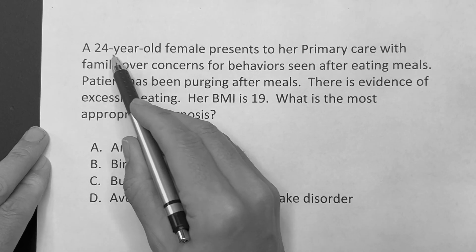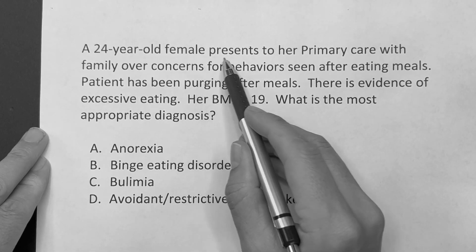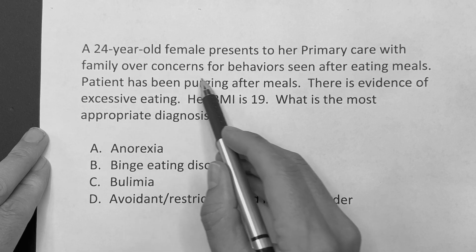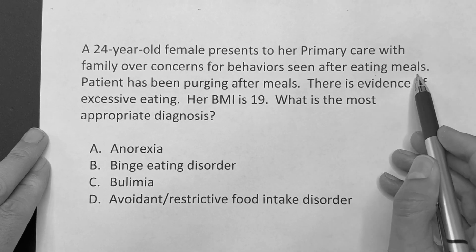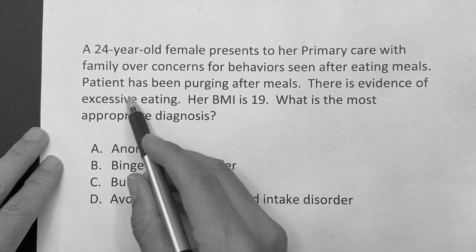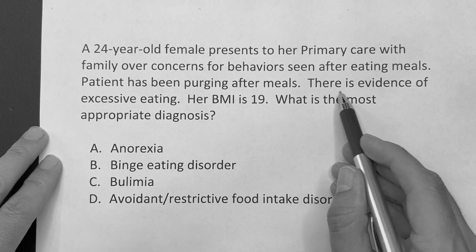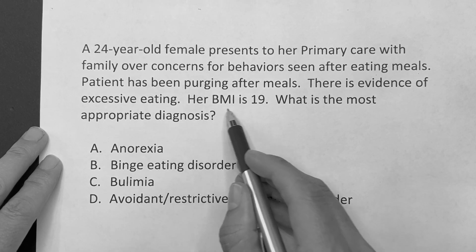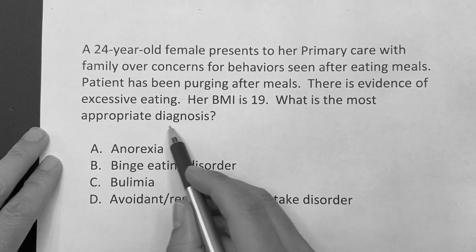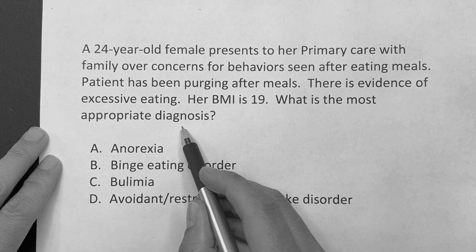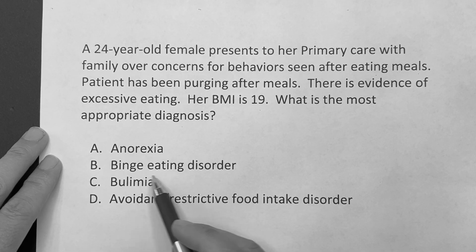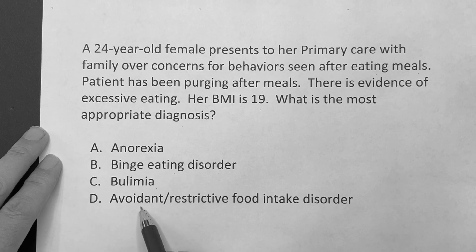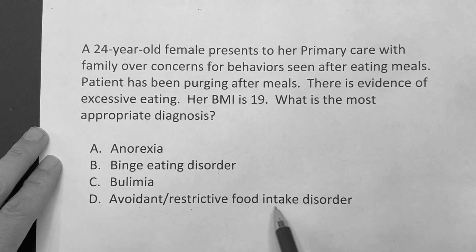This question reads: a 24-year-old female presents to her primary care with family over concerns for behaviors seen after eating meals. The patient has been purging after meals, there is evidence of excessive eating, and her BMI is 19. What is the most appropriate diagnosis? Is it A, anorexia? B, binge eating disorder? C, bulimia? Or D, avoidant restrictive food intake disorder?